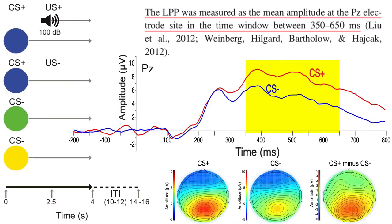For example, Felix measured the LPP as the average voltage from 350 to 650 milliseconds at the PZ electrode site. Why did he use this time window and this electrode site? You might think you could just look at the waveforms and scalp distributions and see that this is where the effect is. But it can be dangerous to use what you see in the data to determine how you analyze the data.